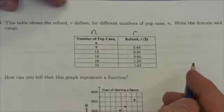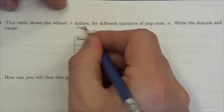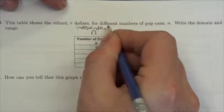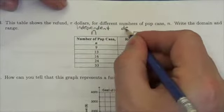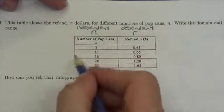So what depends on what? Well I think it should be pretty clear that the refund depends on the number of cans you bring in. So this is going to be my independent variable and R is going to be my dependent variable.